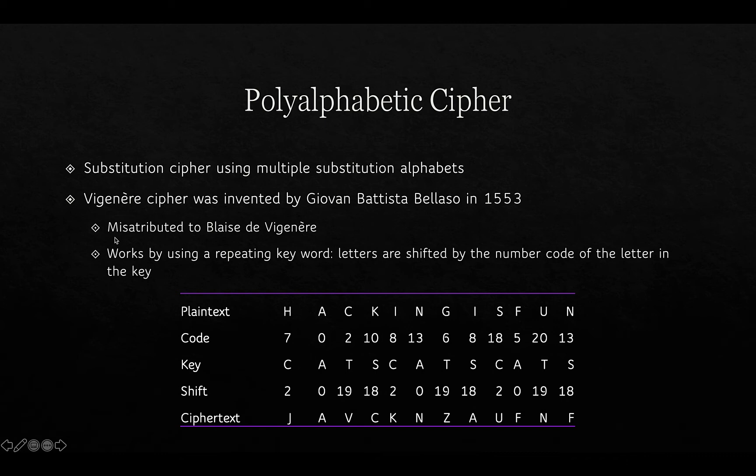A substitution cipher using multiple substitution alphabets is called a polyalphabetic cipher. A good example is the Vigenère Cipher, which was credited to Vigenère but was actually invented by Italian Giovanni Battista Bellaso in 1553. It's commonly called the Vigenère cipher, and Bellaso is forgotten by most — apart from cryptographers who still know where it came from.